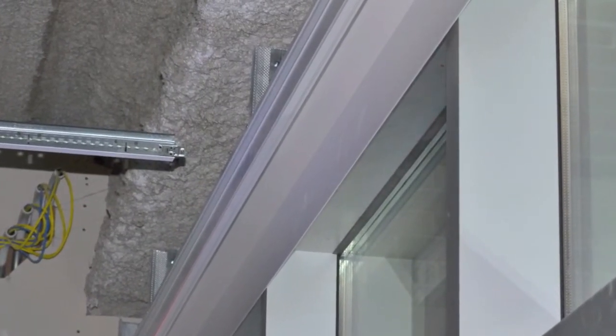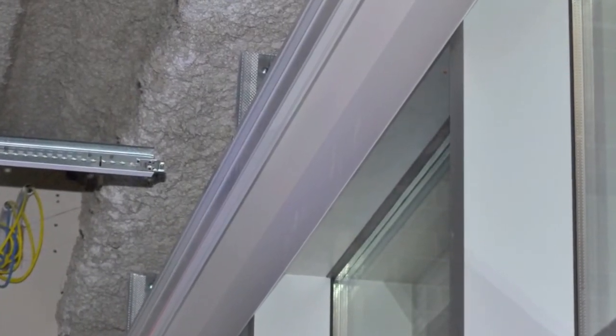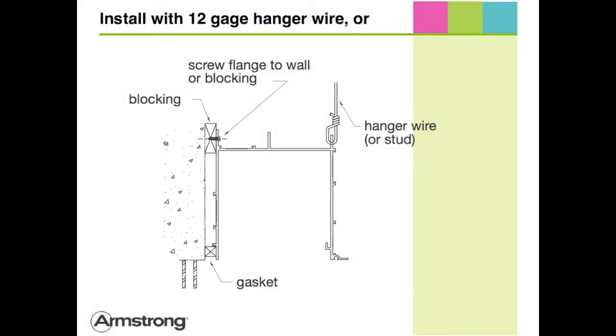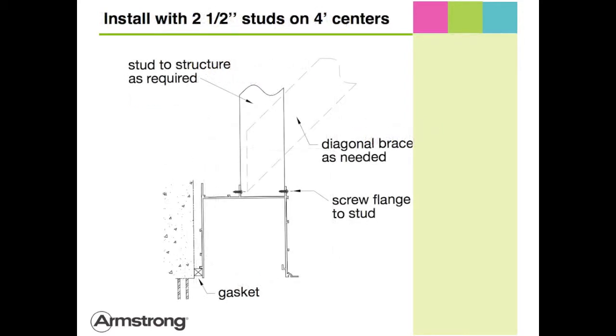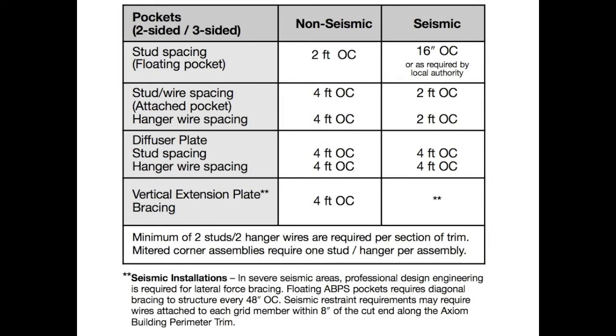Suspend Axiom building perimeter pockets with either 12-gauge hanger wire or 2.5-inch studs. In seismic installations, refer to this chart for proper bracing in accordance with our testing.